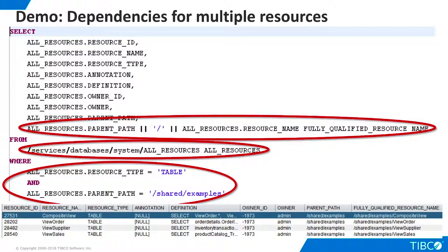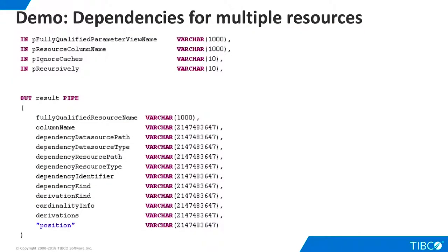When we execute this view, we get information about all of the views in the Shared Examples folder that ships with TDV. We will use our generated column fully qualified resource name as input to our new scripts. Here is the signature for our new general purpose dependency script. As you can see, it returns the same data structure as our earlier script.